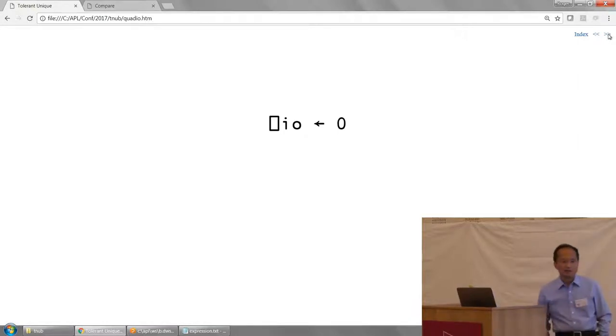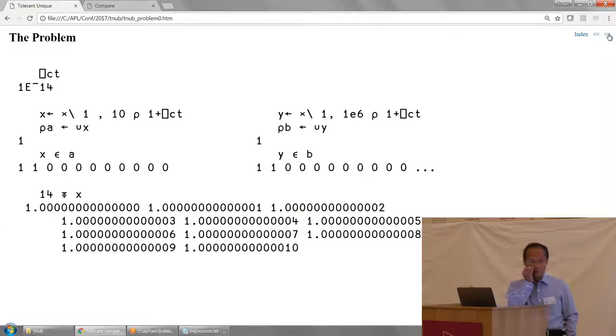The index origin is zero, although the code, ideas, algorithms and examples all work in one origin with obvious modifications. What is the problem? We're using tolerant comparison with some non-zero value of Quad CT, and applying unique to some vector. It tells us there's only one unique element. You believe that X actually looks like this, and the expression tells you there's something wrong. Even more concerning, there are some elements of X which are not in its unique, which is undesirable.